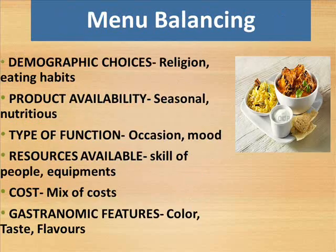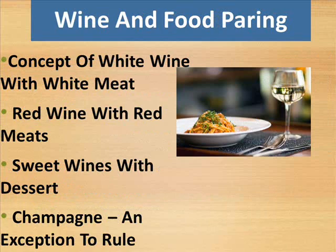Menu balancing considers: Demographic choices — religion, eating habits. Product availability — seasonal. Nutritious value. Type of function, occasion, mood. Resources available — skill of people, equipment, cost mix of costs. Gastronomic features — color, taste, flavors. Wine and food pairing: the concept of white wine with white meat, red wine with red meats, sweet wines with dessert, and champagne as an exception to the rule.